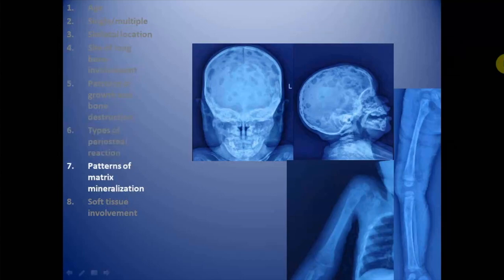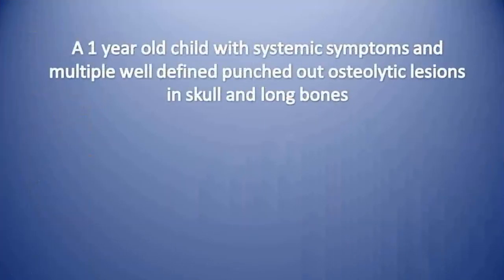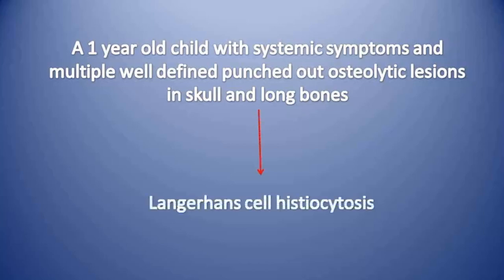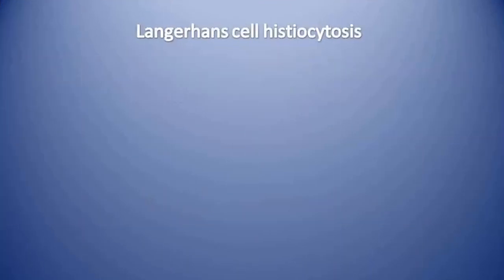There is no obvious matrix mineralization, and these lesions have adjacent soft tissue involvement near the osteolytic lesions. This is a case of a one-year-old child with systemic symptoms and multiple well-defined punched-out lytic lesions in the skull and long bones — this is a case of Langerhans cell histiocytosis (LCH).